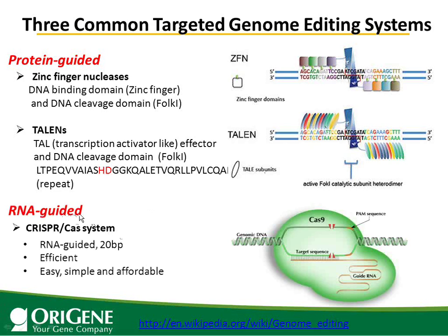In contrast, the CRISPR-Cas9 system is RNA-guided. You only need to clone a 20 base pair target sequence into the vector — it's very easy, simple, and affordable. This system is also very efficient, as I will show you with data later. Because the stringency of the target relies only on the PAM sequence of three nucleotides — very loose stringency — you can essentially knock in at any site, unlike zinc finger nucleases which have many restrictions.